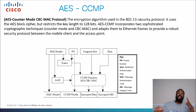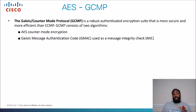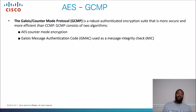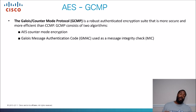AES GCMP stands for Galois Counter Mode Protocol. It's a robust, authenticated encryption suite that is more secure and efficient than CCMP. GCMP consists of two algorithms: AES counter mode encryption and Galois Message Authentication Code, which is used as a message integrity check. Again, you don't need to know too much about the algorithms — just know there are two types of encryption for AES: GCMP and CCMP.